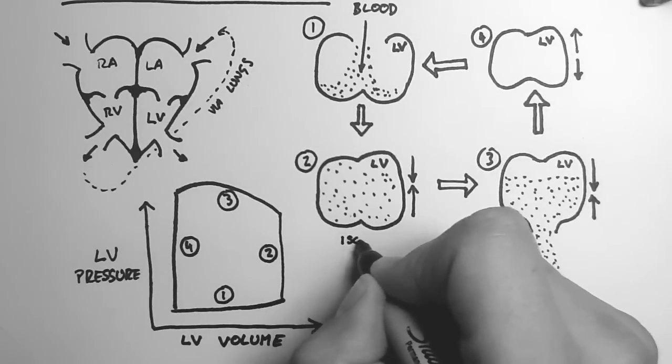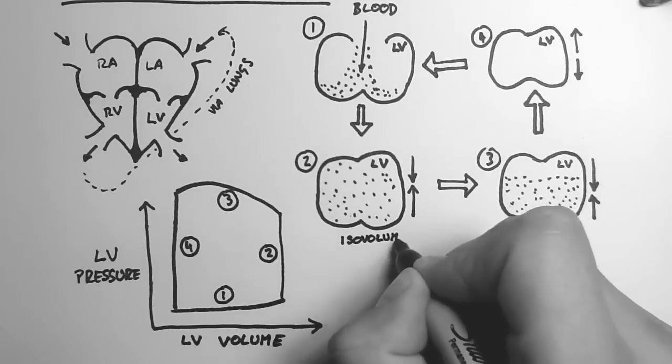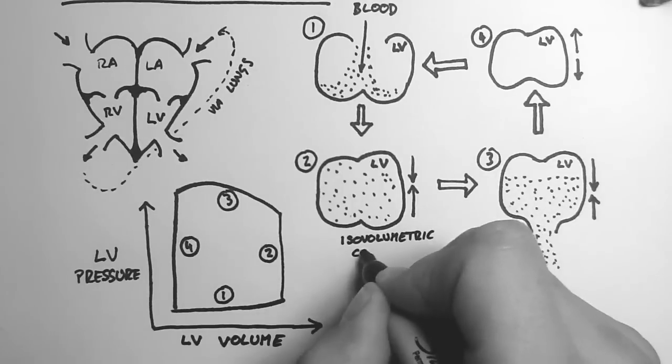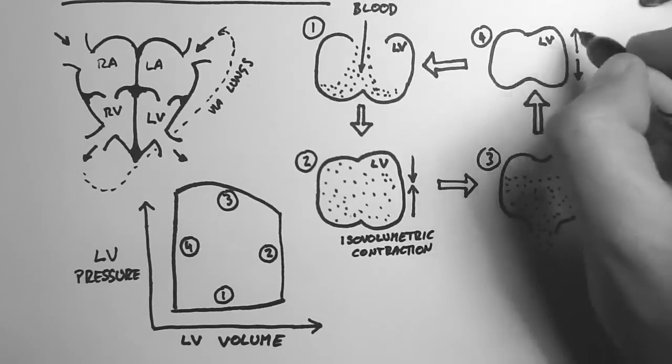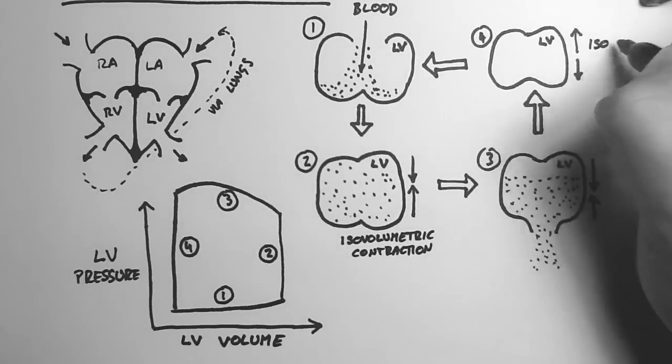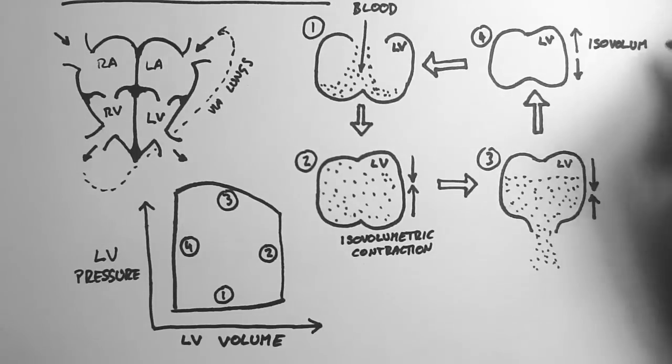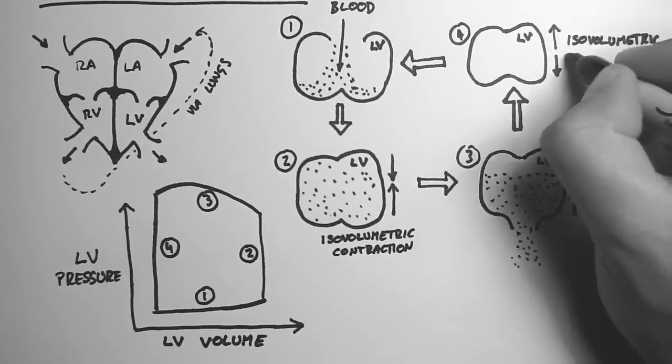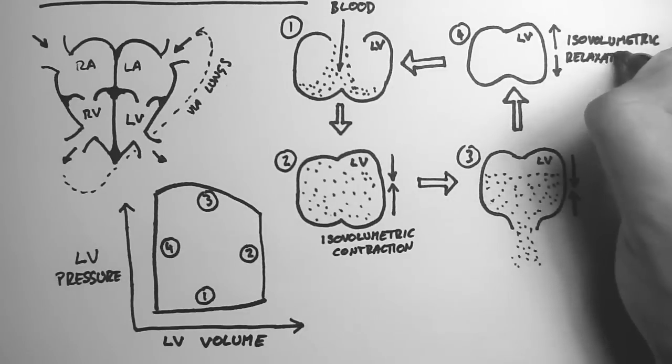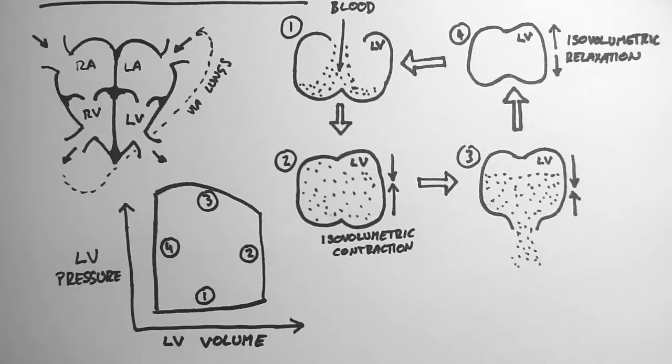Now, two important points that come up in the textbooks all the time: the point of isovolumetric contraction and isovolumetric relaxation. This means that the volume stays the same, but the pressure changes. And these are points two and four on this graph. And that's an overview of the pressure volume loop.